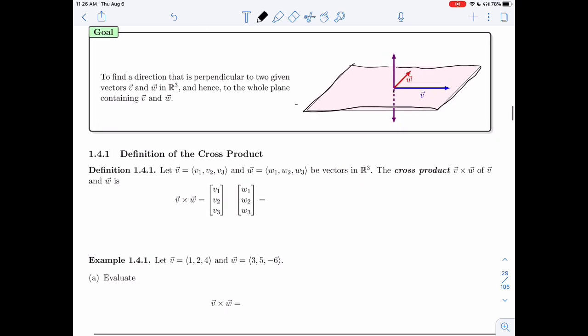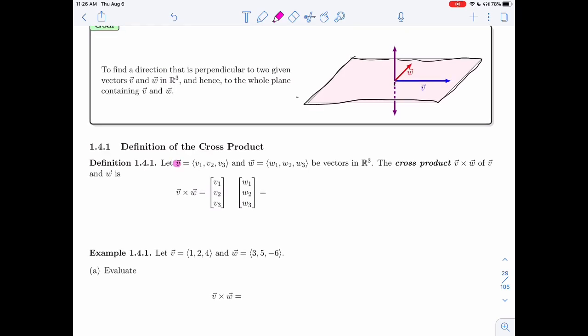So let's define the cross product. Let's say I'm given two vectors, V here and W. Notice that they're both in R3. The cross product only exists in 3D, not in 2D, not in 4D, only in 3D. The cross product of V and W will be denoted by V cross W. The dot product uses a dot, the cross product uses a cross.